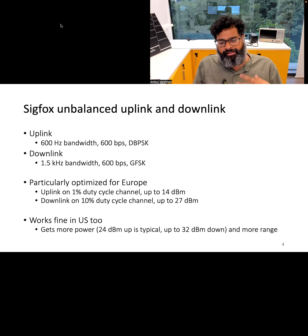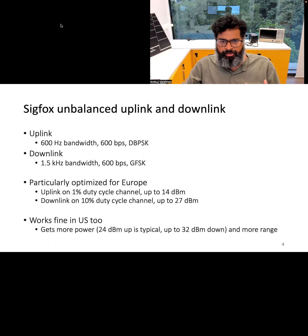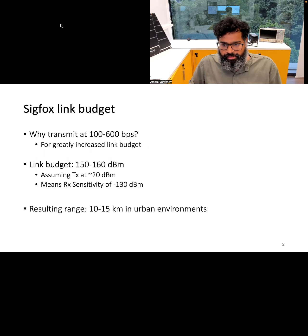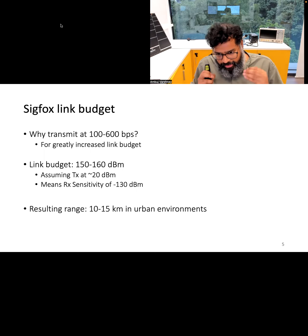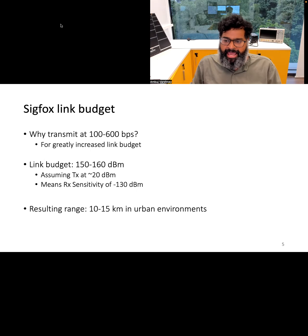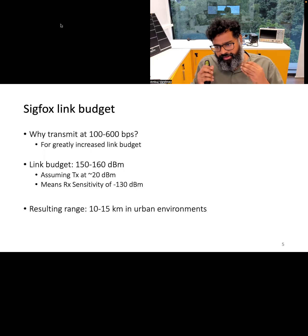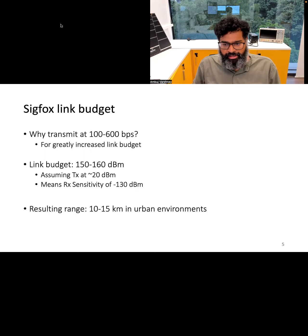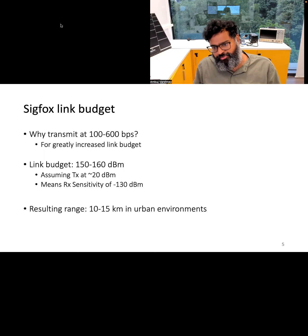For example, in the United States, the Sigfox protocol transmits at a much higher transmit power compared to other parts of the world, such as Europe. Transmitting at low data rate and bandwidth allows us to significantly improve the link budget. We are typically talking about 150 to 160 dB of link budget for a transmit power of about 20 dBm at the Sigfox transmitter. This corresponds to a received sensitivity of about -130 dBm for a Sigfox receiver.